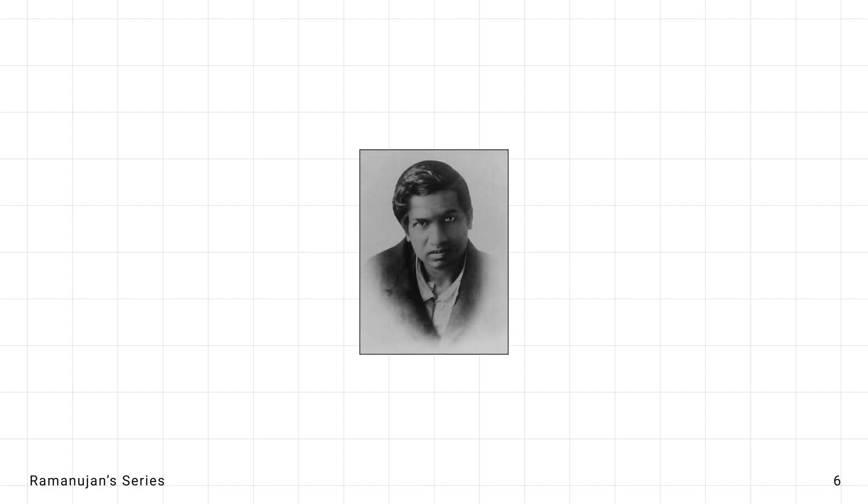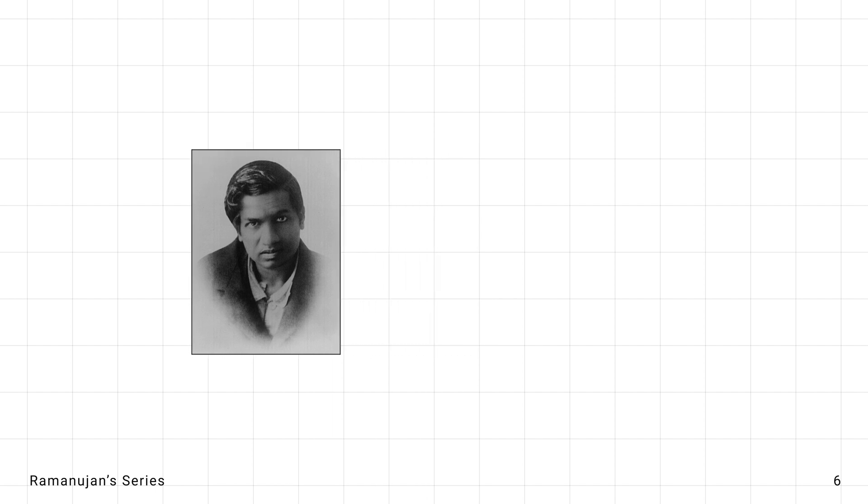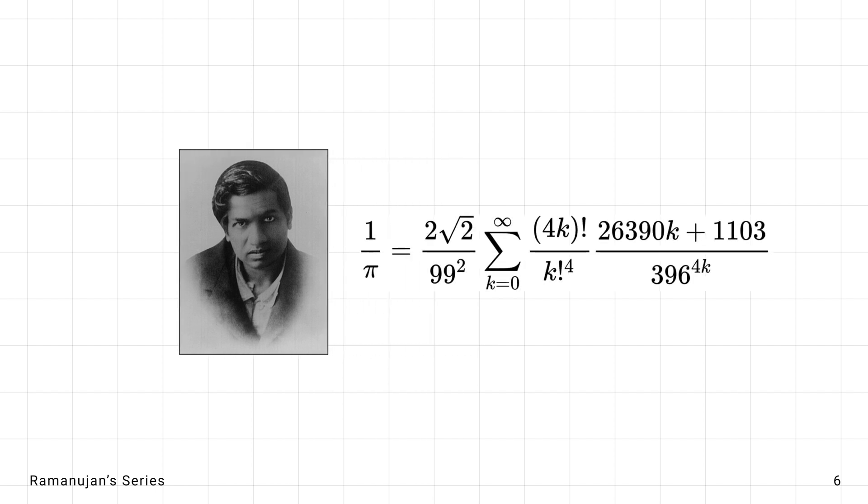Srinivasa Ramanujan amazed the world with his rapidly convergent series for pi. His formulas, noted for their beauty and power, can calculate pi to millions of digits with just a few terms.